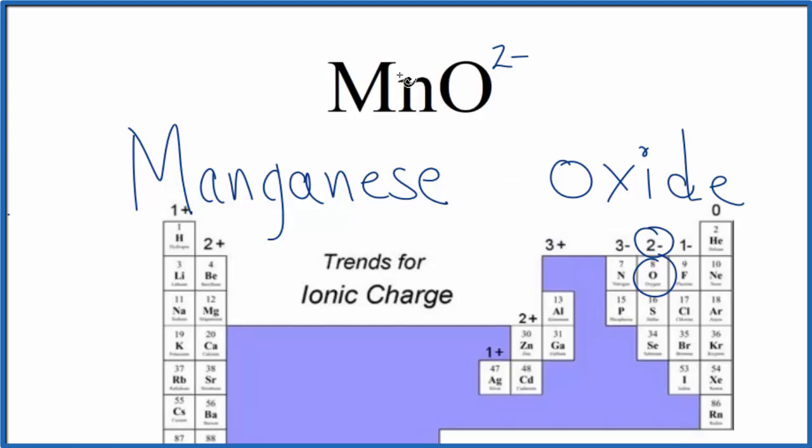Because of that, so this will all add up to zero, have a net charge of zero, the Mn has to be two plus. And to show that, we write after the manganese, two, Roman numeral, we put it in parentheses. So that makes the name for MnO, manganese two oxide.